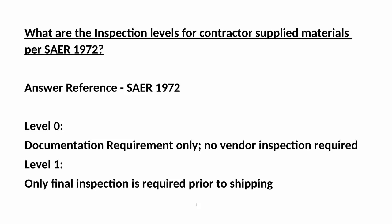What are the inspection levels for contractor-supplied materials per SIR 1972? Answer Reference: SIR 1972. Level 0: Documentation Requirement Only — No Vendor Inspection Required. Level 1: Only Final Inspection is Required Prior to Shipping.